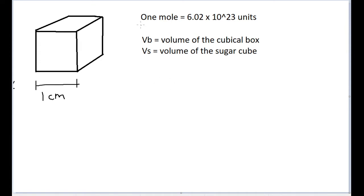If you don't know what a mole is, a mole is a number that represents 6.02 times 10 to the 23rd power of something — an Avogadro's constant number of a quantity, no matter what that is. In this case, we're looking for a mole of sugar cubes in a box. So first, let's try finding out what the volume of that larger box is going to be. Let's define some new variables: let VB equal the volume of the cubical box, and let VS equal the volume of one sugar cube.